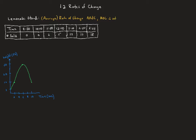We're going to find the rate of change in sales of lemonade between 11 o'clock and 1 o'clock. To find our rate of change, we take the number sold — think of time as the x-value and number of lemonades sold as the y-value. We take the number sold at 1 o'clock, which is 13, minus the number sold at 11, which is 2. That means we've sold 11 lemonades total between 11 and 1 o'clock.